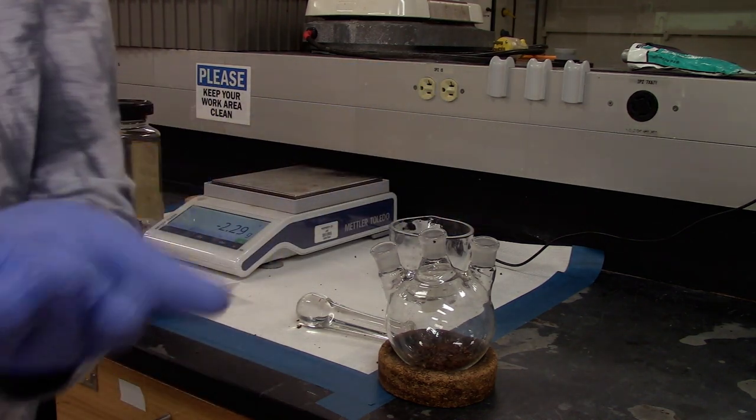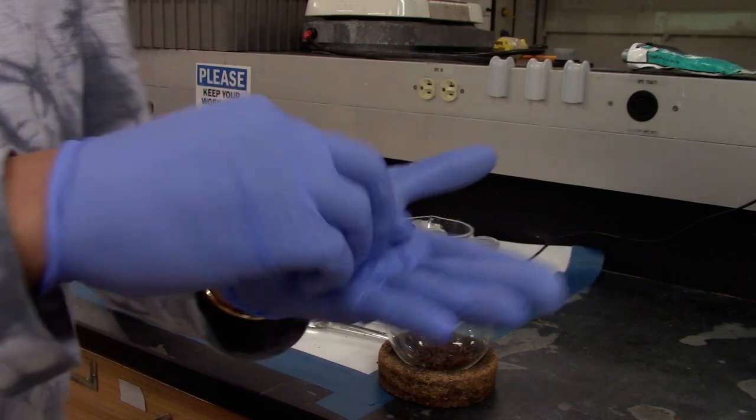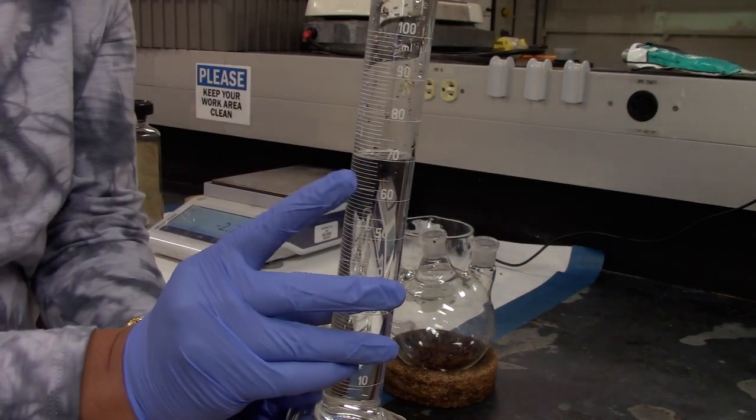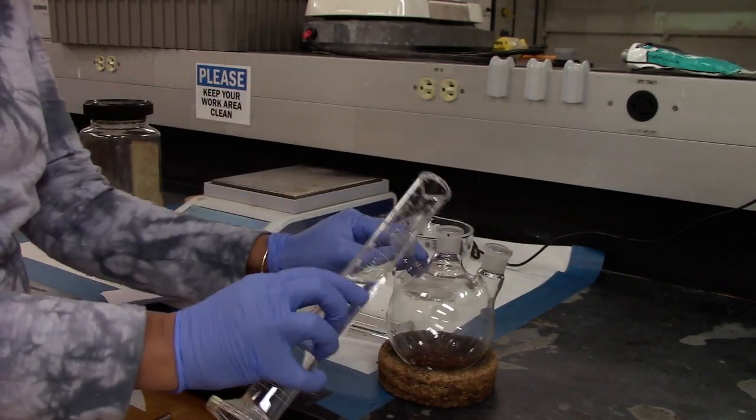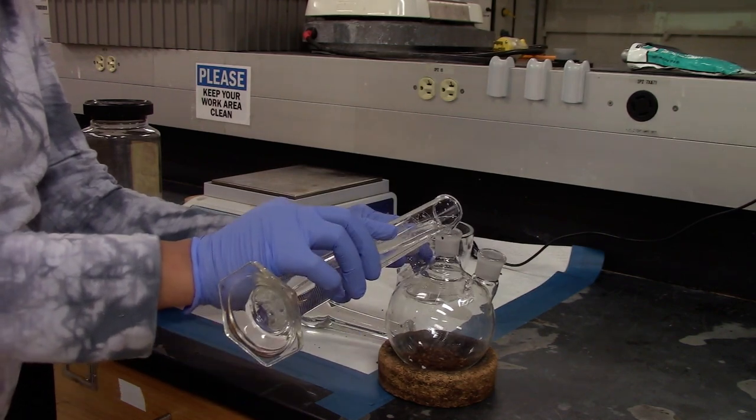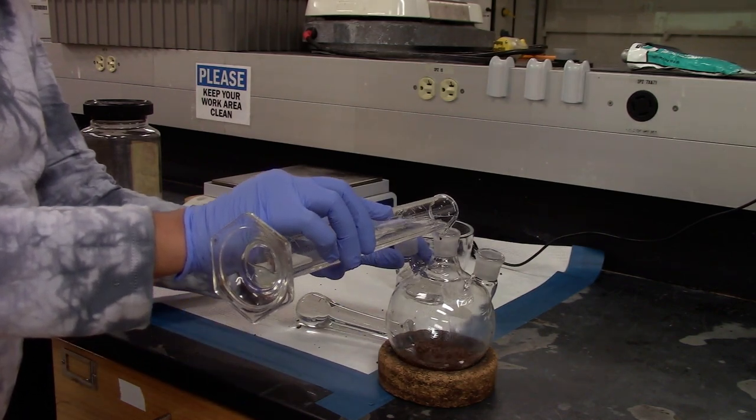Add the crushed clove to the 500ml round bottom flask. Add 2 or 3 boiling stones and 70ml of DI water and let it soak while you set up the glassware.